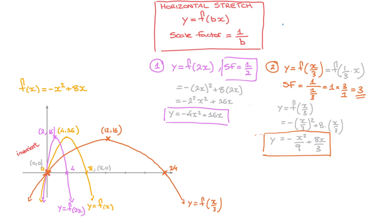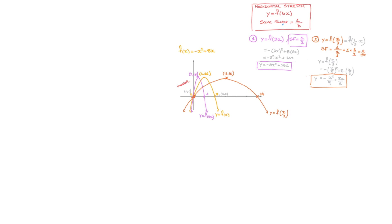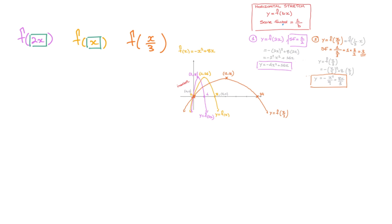Both examples may seem counterintuitive, and the reason horizontal stretches in general may seem a little strange is because the scale factor is the reciprocal of the number we're multiplying x by. So I'll finish this tutorial explaining why the scale factor is 1 over b. To really understand how horizontal stretches work, I want to draw your attention to the input value. For f of x the input is just x. For f of 2x the total input is 2x, which increases 2 times faster than x does — 2 times faster.